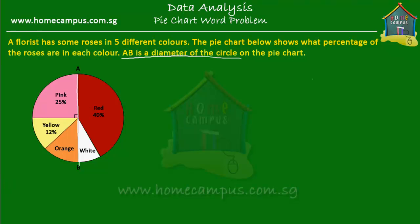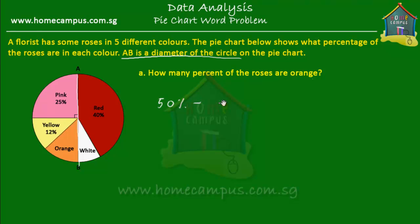Now let's see what questions we have on this pie chart and solve them one by one. The first question is: how many percent of the roses are orange? As we said, 50% of the roses are either pink or yellow or orange. So the percentage of roses that are orange is 50% minus 25% that are pink minus 12% that are yellow. So 50 minus 25 is 25, and 25 minus 12 is 13.